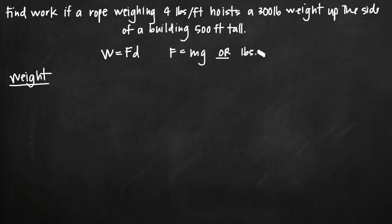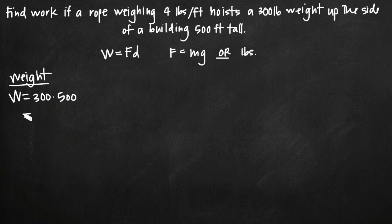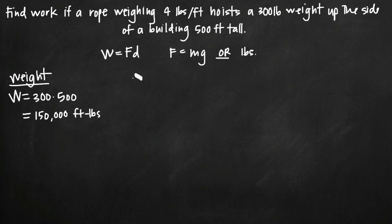In this case we have 300 pounds, so force equals 300. Work equals force of 300 times distance. The weight is on the ground and we're hoisting it to the top of the 500-foot building, so the distance is 500 feet. That means the work done on the weight itself is 150,000 foot-pounds. The units are foot-pounds because 300 has units of pounds and 500 has units of feet.